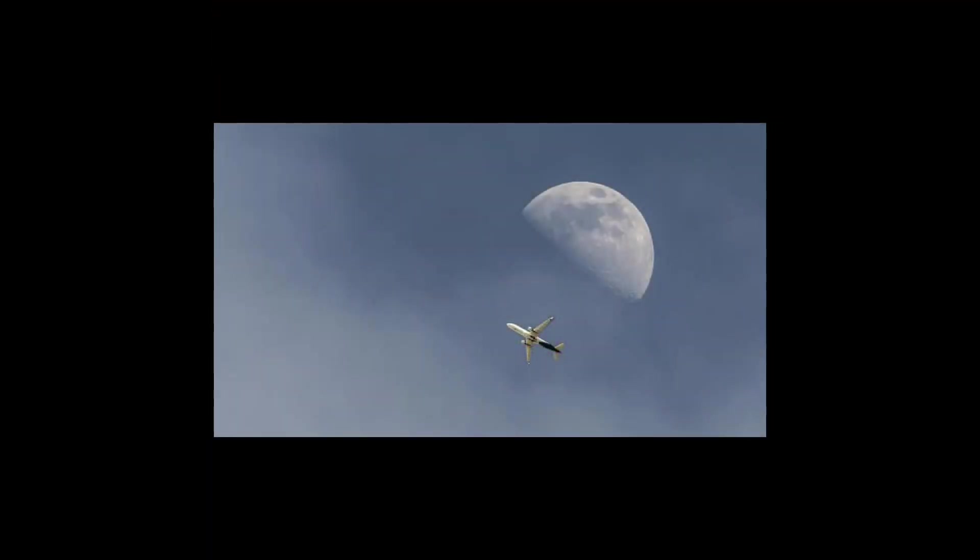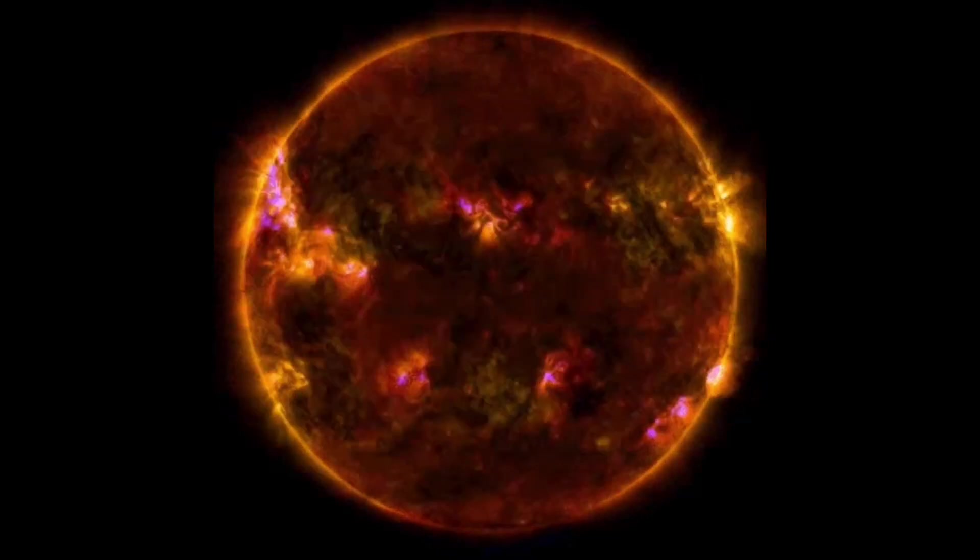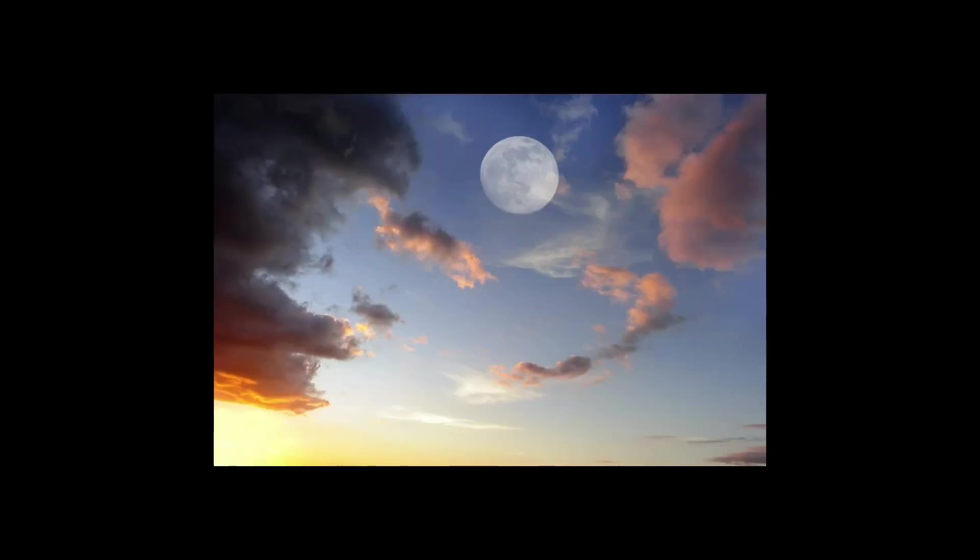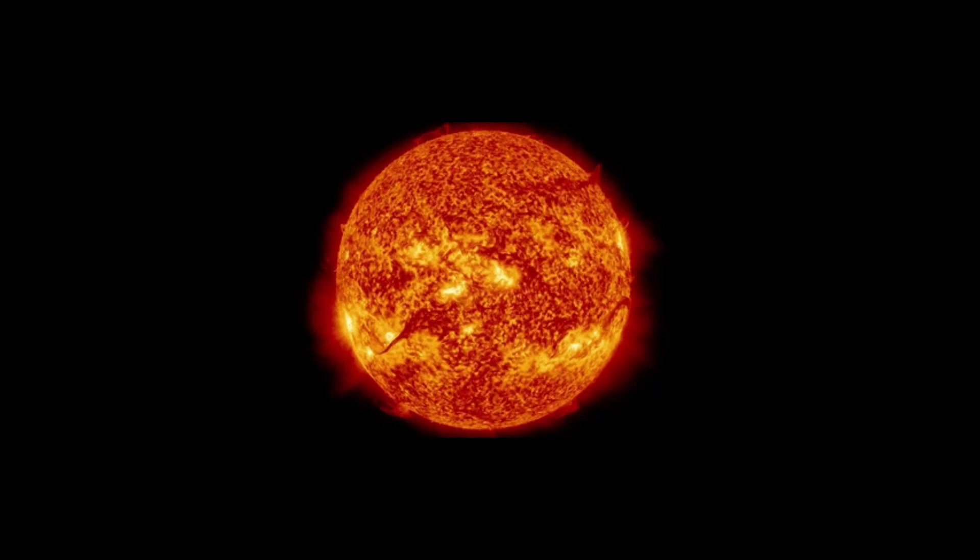We can see the moon in the day for the same reason we see it at night. It is reflecting light from the sun, and its closeness to Earth makes it brighter than the day or nighttime sky. After our star, the moon is the brightest object we can see.